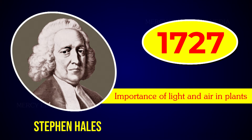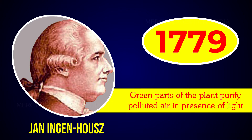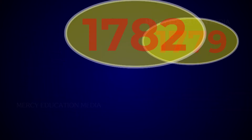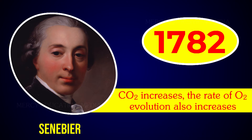In 1779, Jan Ingenhousz discovered that the green parts of the plant purify the polluted air in the presence of light. In 1782, Senebier showed that as the concentration of carbon dioxide increases, the rate of oxygen evolution also increases.